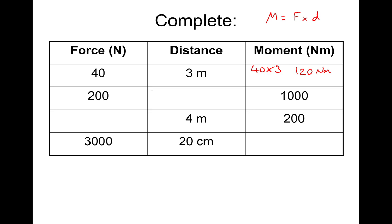This middle one, we need distance. So our moment is force times distance, I'll call this question 2. So our moment is FD. So let's put the numbers in. The moment is 1,000 Newton meters. So 1,000 equals the force, which is 200, times distance D. So we need to make D the subject. We need to get rid of the times 200, and do the opposite of timesing by 200, which is dividing by 200. 1,000 divided by 200 gives us 5 meters.